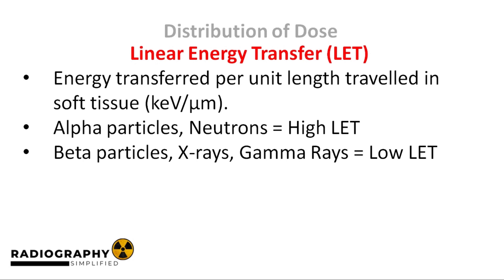There are two types of linear energy transfer: high LET and low LET. High LET radiation includes radiation sources that possess a high mass and charge. We already explained that alpha particles deposit a high amount of their energy in a short distance due to their high charge. Thus, alpha particles are typical examples of high LET radiation. Although neutrons do not have a charge, they also present high LET due to their great mass and colliding ability.